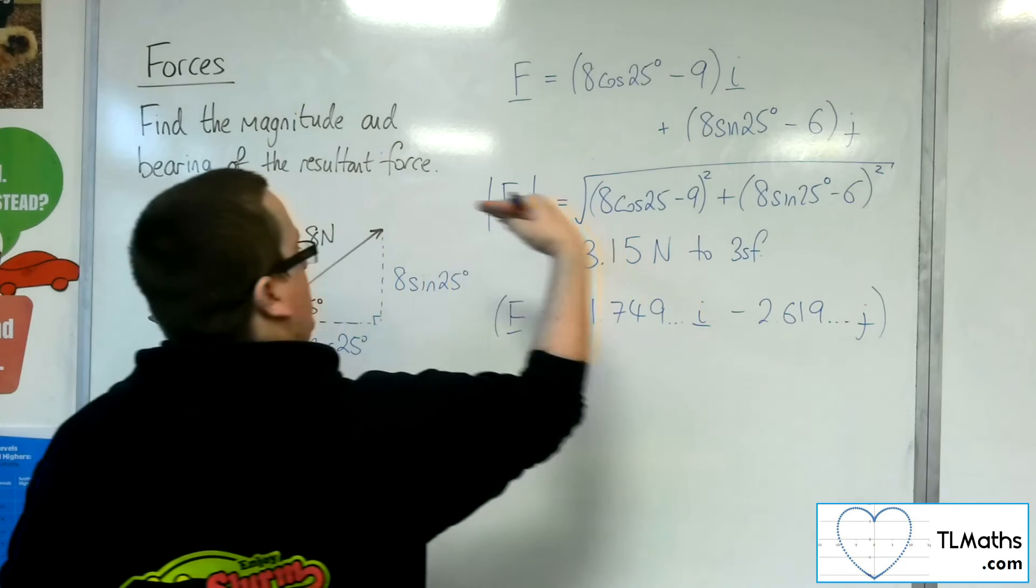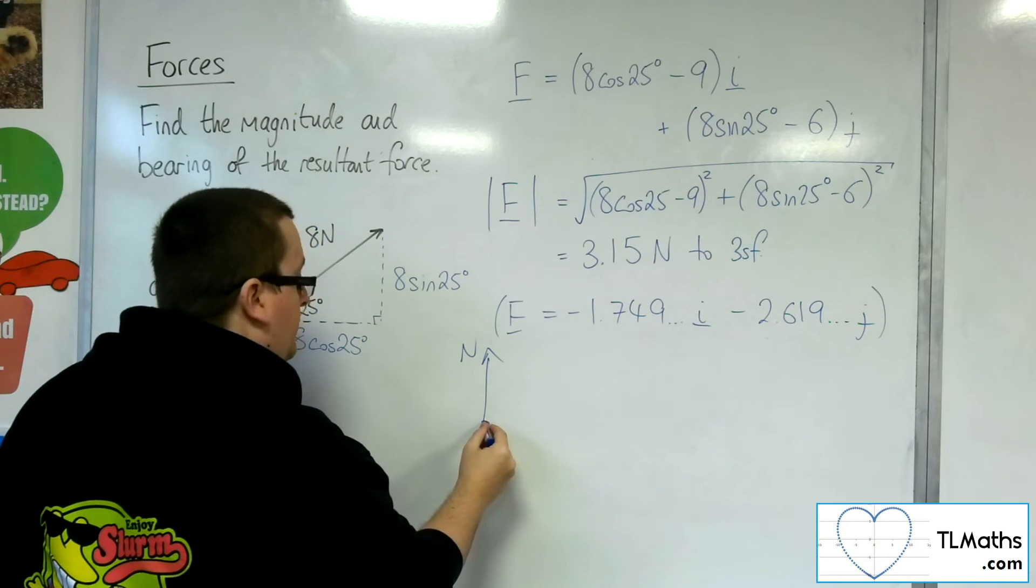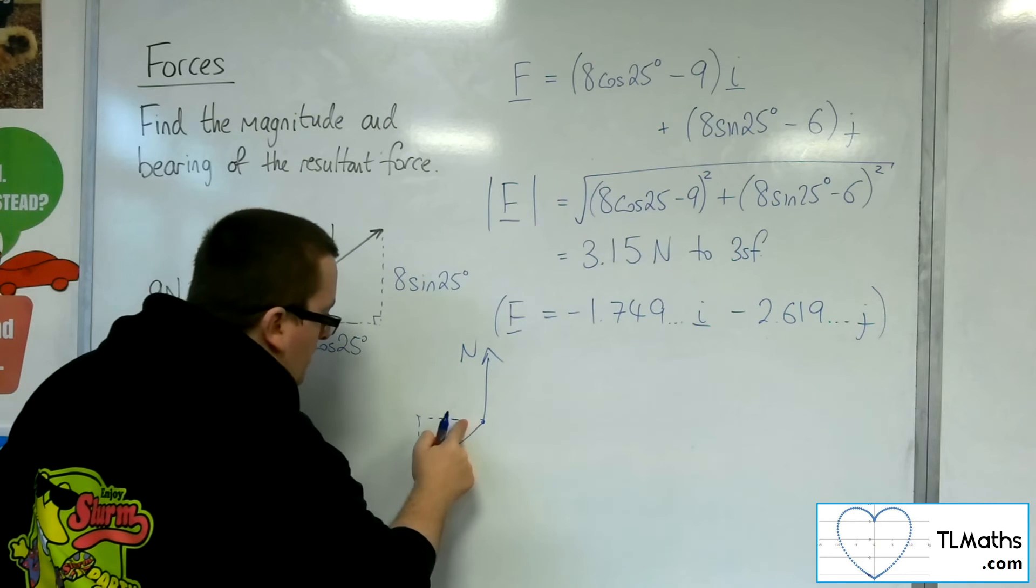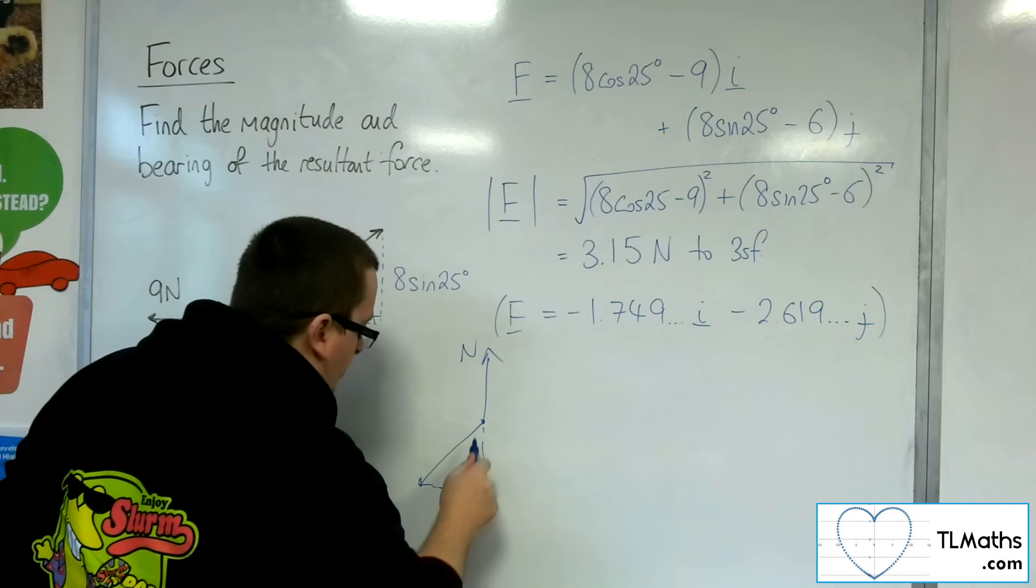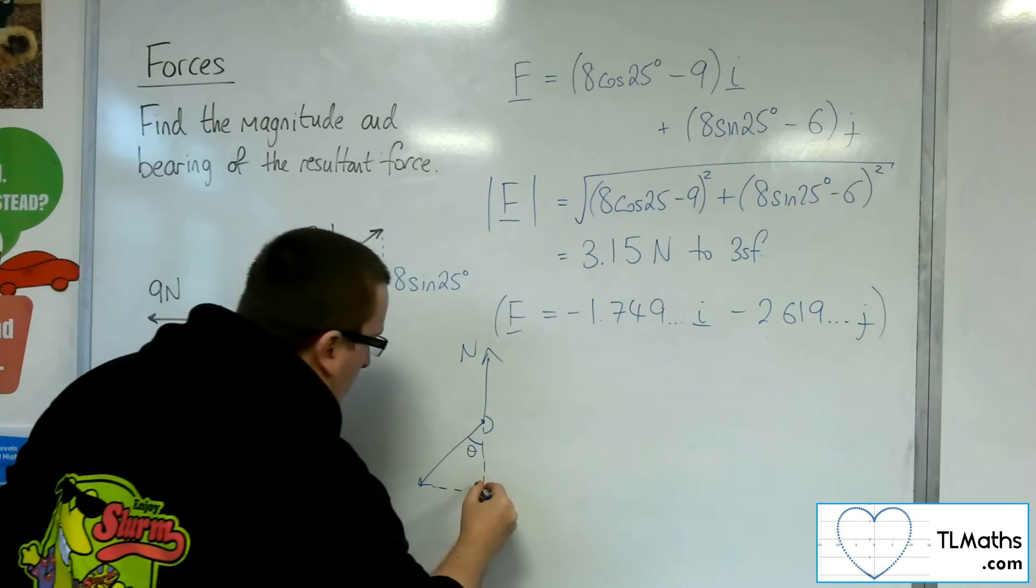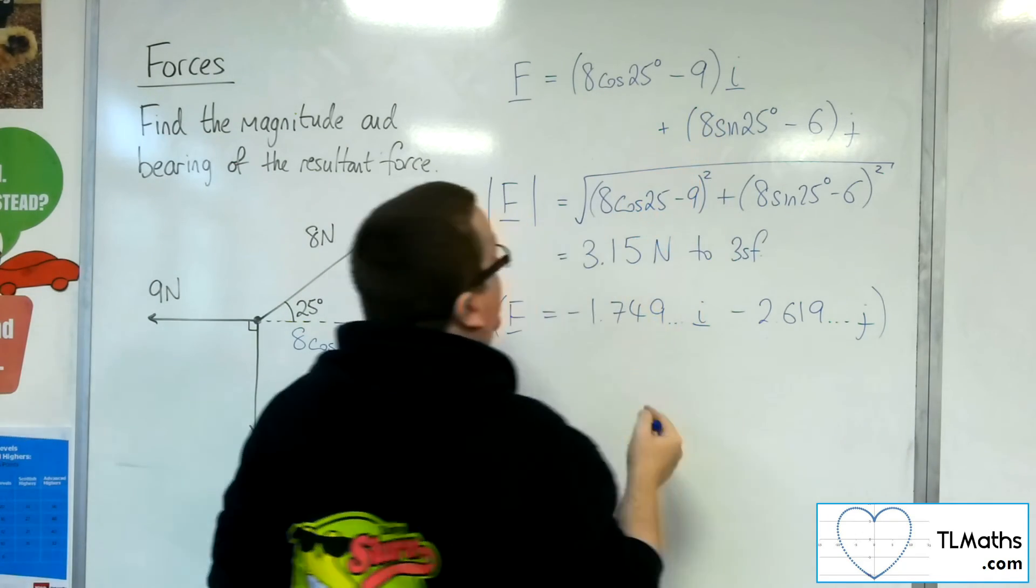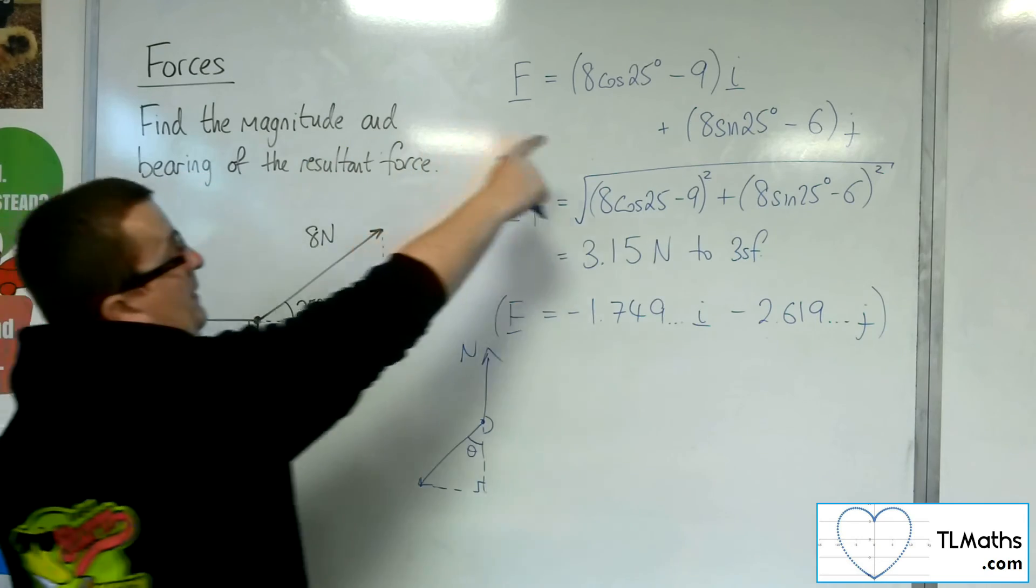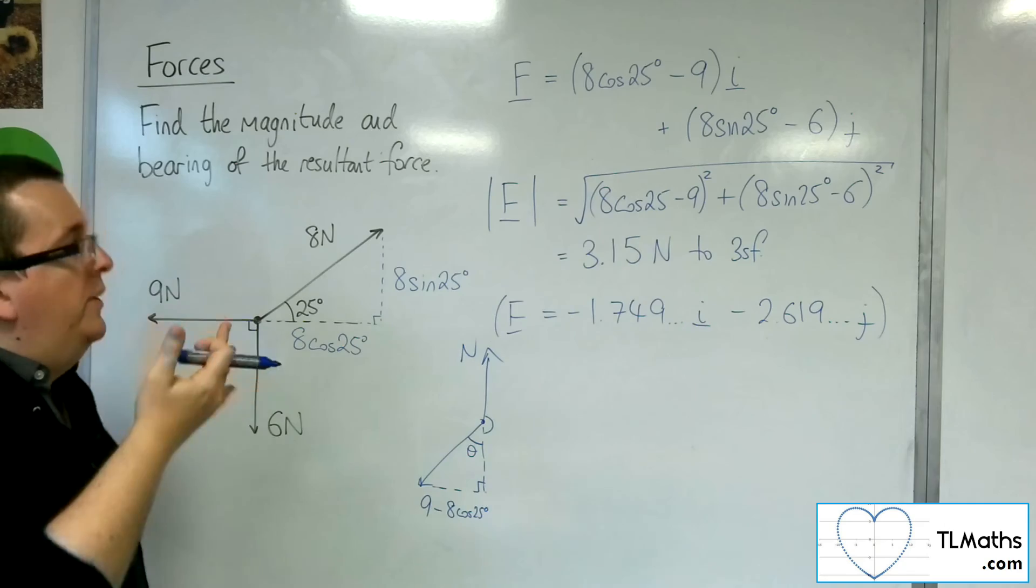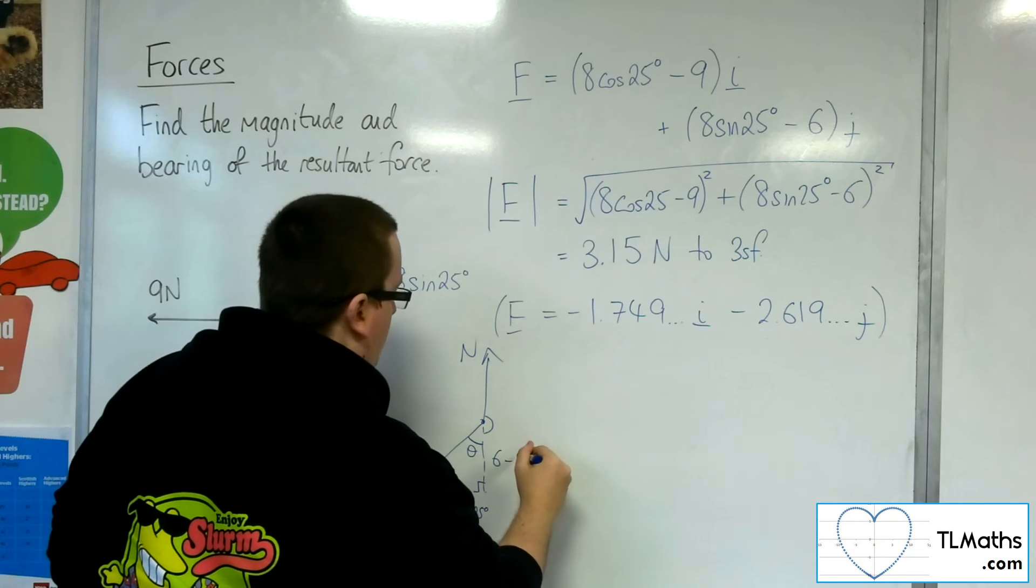So we've got a force that's going to the left and down. So it's actually, if I draw in a north, well, the particle's actually being pulled in this direction. Now, actually, it might be easier if I draw the triangle this way, won't it? So I need to find this angle, and then I can add it to 180 to get the bearing. So what have we got? Well, this is your 1.749, which is the length of that. Now, 8 cos 25 take away 9 is negative. So the positive version is multiplying that by minus 1, which will get you 9 minus 8 cos 25. It's got the same effect as just swapping the terms. And likewise, the 8 sin 25 take away 6, multiplying that by minus 1, we get the 6 minus 8 sin 25.